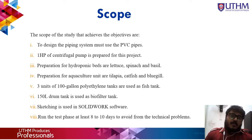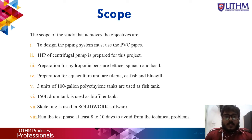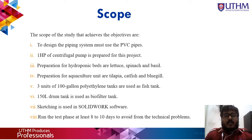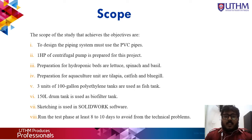The scope for my project includes: designing the piping system using only PVC pipes — specifically three sizes of PVC pipes. The second scope is the use of one horsepower centrifugal pump. The third is the hydroponic bed plants: lettuce, spinach, and basil.